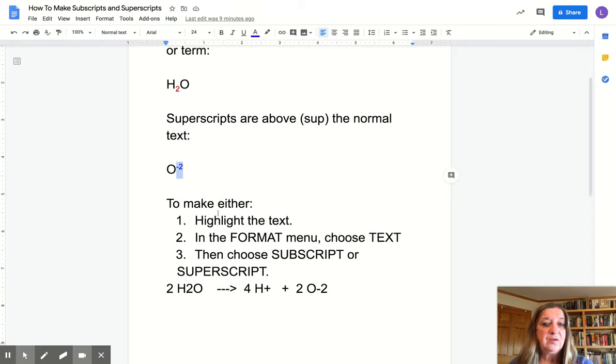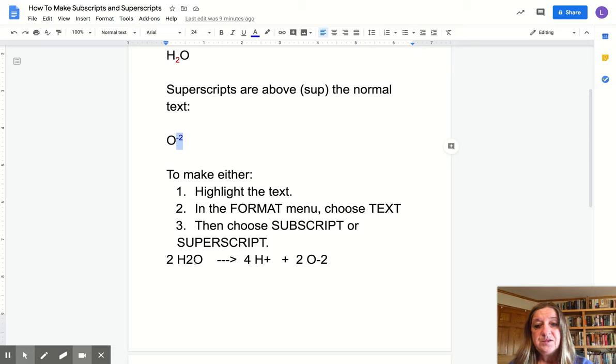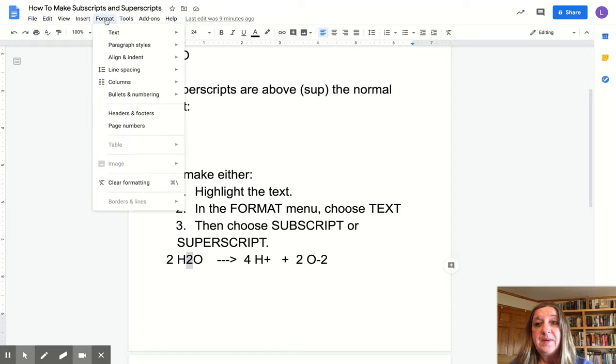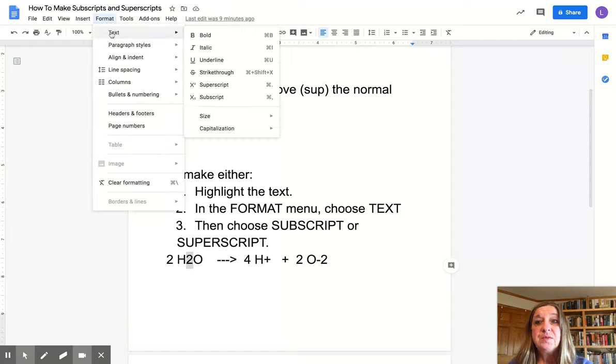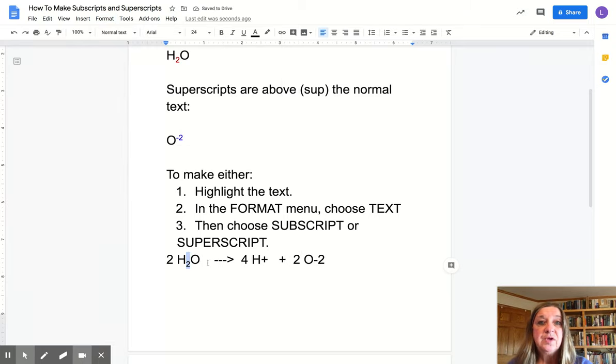It's easy to make either one of them. To do that, I'm going to do this down here in the H2O. I'm going to highlight the 2, and then I'm going to go up to the format menu and choose text. I'm going to choose subscript, and you can see the 2 gets a little bit smaller and goes down below the H.